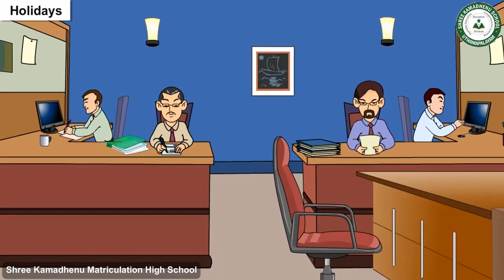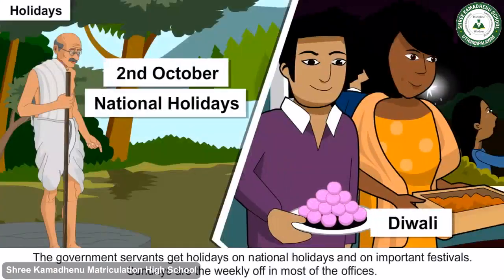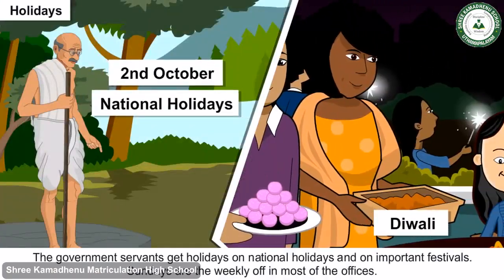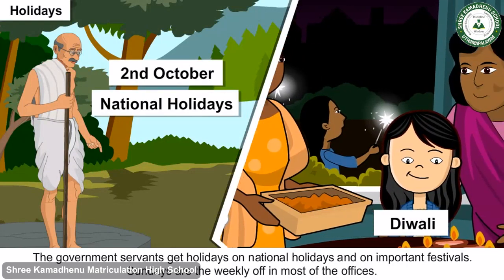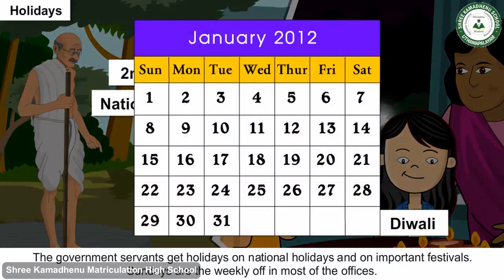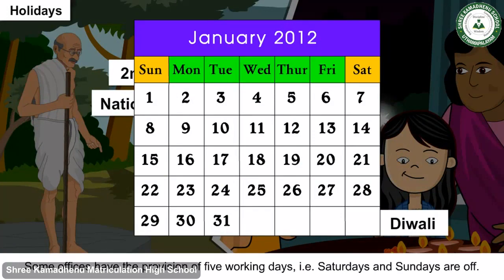Holidays: Government servants get holidays on national holidays and important festivals. Sundays are the weekly off in most offices. Some offices have a provision of five working days, meaning Saturdays and Sundays are both off.